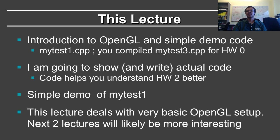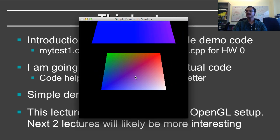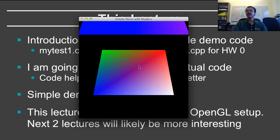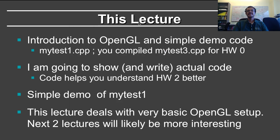The current lecture deals with an introduction to OpenGL and some simple demo code. For homework zero you compiled a simple demo program and all of you have run that. In this sequence of lectures, we'll show a much simpler version of that which just outputs a plane. Here is my program—essentially I've just got two planes, one on top of the other, with this plane moving in and out. We are going to talk about actual code and I'm going to show you the actual code used in this program.